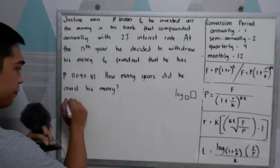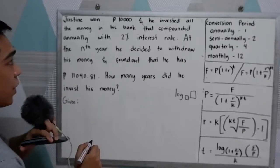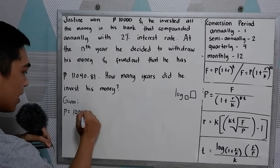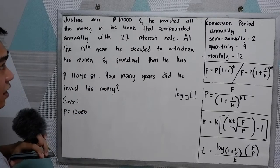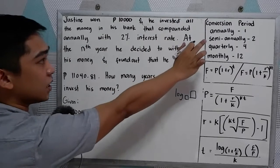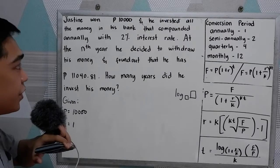So let us first determine all the given. We have the principal, which is P = 10,000. Then our K, compounded annually, is 1. Look at the conversion period.